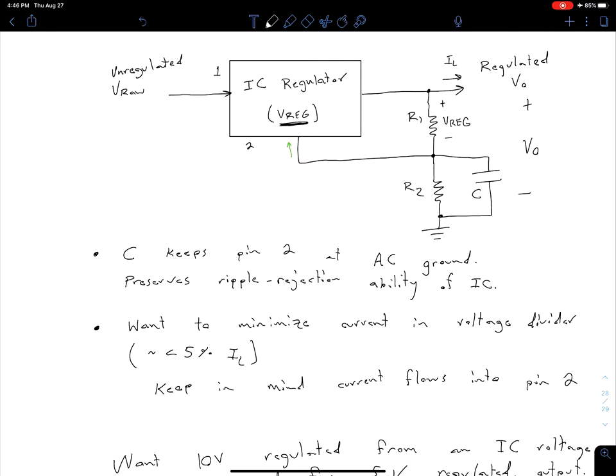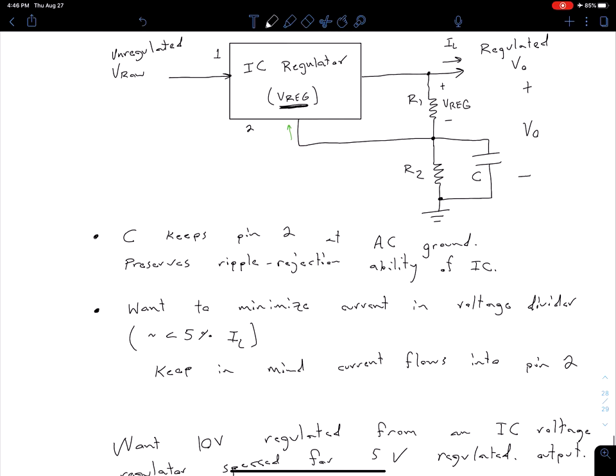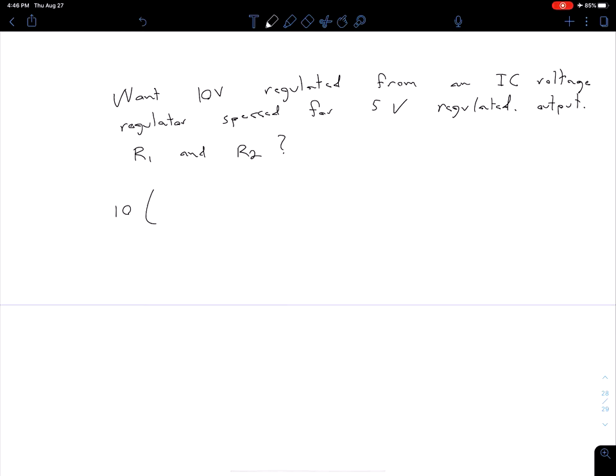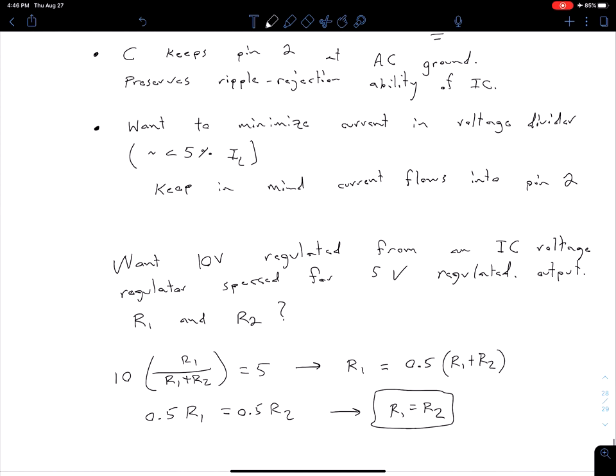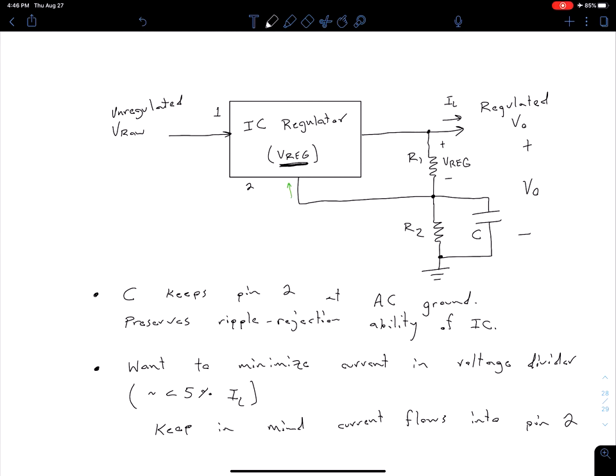We know that Vreg is 5 and we want Vout to be 10. We can say 10 times R1 divided by R1 plus R2 equals 5. Rearranging: R1 equals 0.5 times R1 plus R2, which gives us 0.5 R1 equals 0.5 R2. This simplifies to R1 equals R2, which is intuitive since we want half the overall output to be our Vreg. The two resistor values should be equal such that the output is split across R1 and R2.